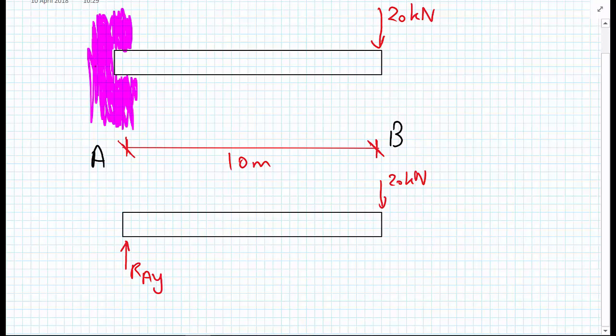We'd expect as well that the wall can give us some support in the X direction and I'll draw that in a positive X direction. I don't know what the direction of that force is yet. So that's R_AX for the X direction.